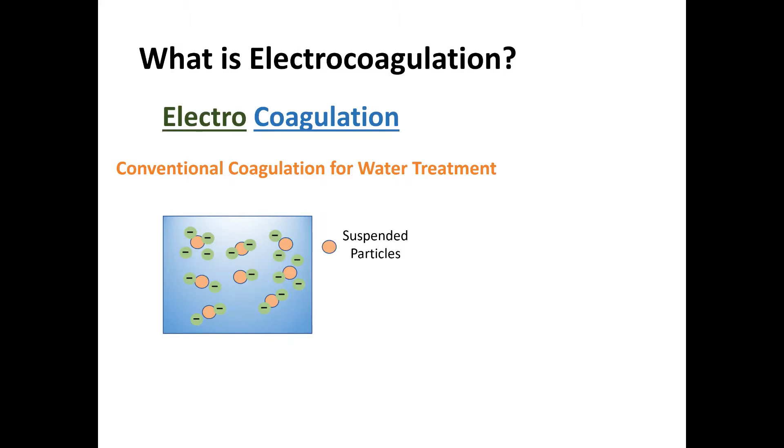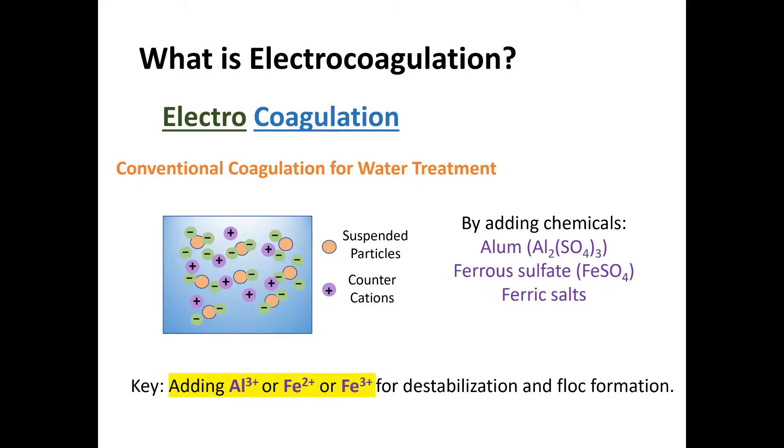To make bigger flocs that will be easily separated from water, we add counter-ions to coagulate suspended particles. We add chemicals like alum, ferrous sulfates, and ferric salts. The key point here is that we are adding multi-valent cations such as aluminum, ferrous or ferric ions for destabilization and floc formation.